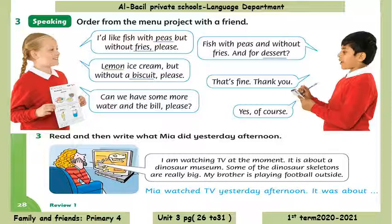Now I would like you to practice this at home with your sister, brother, or any friend. Number three: read and write what Maya did yesterday afternoon. I'm watching TV at the moment — it's about a dinosaur museum. Some of the dinosaur skeletons are really big. My brother is playing football outside. Maya watched TV yesterday afternoon. It was about a dinosaur museum — yes, that's right.